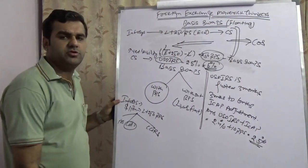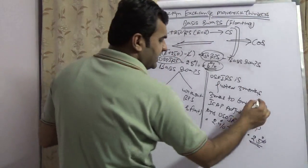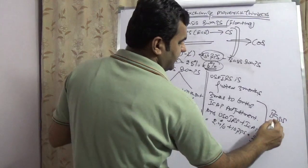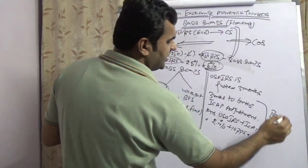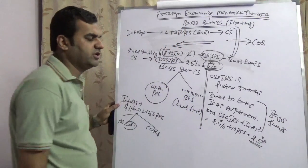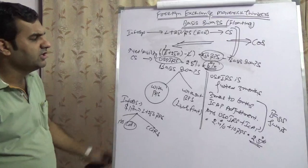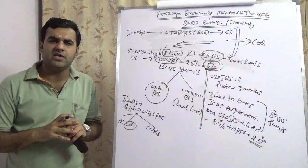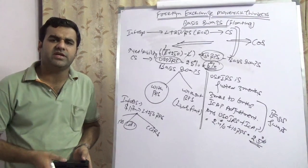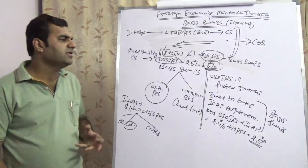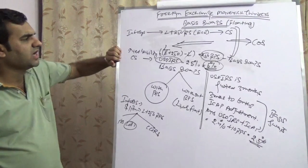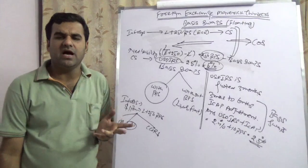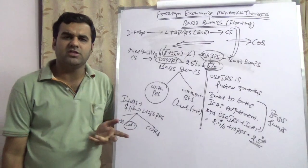That ICAP adjustment is another example of a basis swap — where one side you have a floating and the second side you again have a floating. Basis swap is not a separate kind of swap that you trade individually; it is simply a swap where both sides have a floating rate. This can happen in INR as well — all MIBOR-linked bonds are an example of a basis swap.